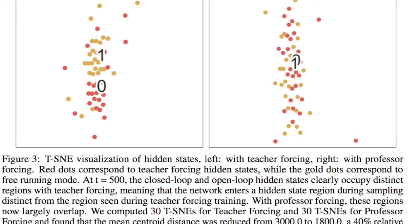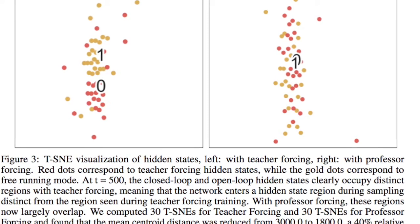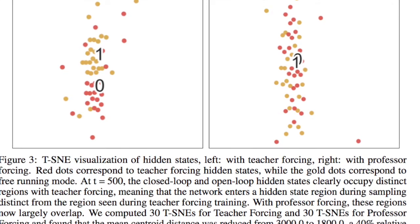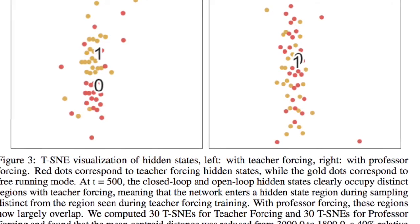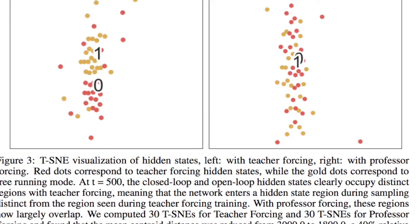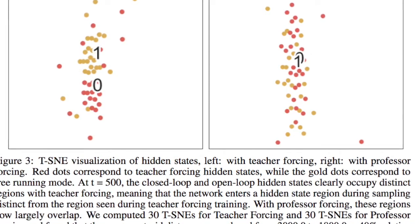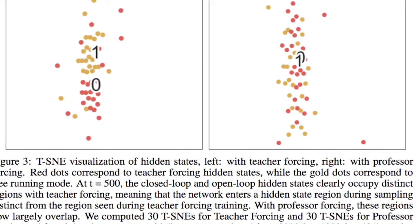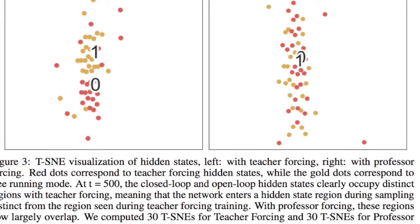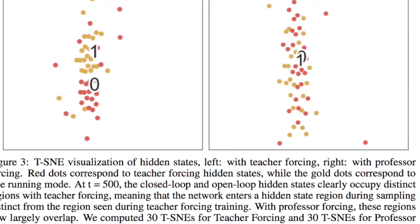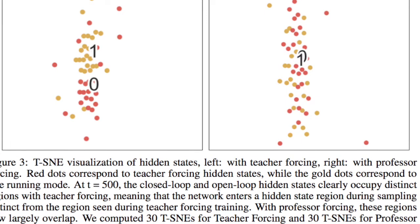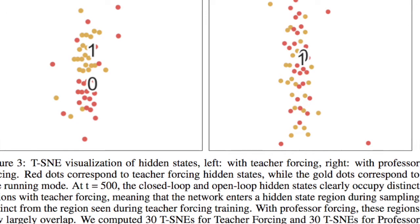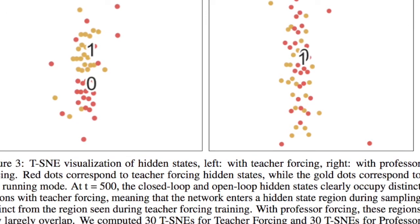Here are two additional comments on the Professor Forcing algorithm. One, Professor Forcing requires sampling from the model during training time. For some types of autoregressive models, like the recent WaveNet or PixelCNN methods, sampling is relatively slow compared with the teacher forcing updates. A latent variable alternative, which is autoregressive over large chunks of the sequence, could make sampling faster and enable the use of Professor Forcing for a wider class of autoregressive models.